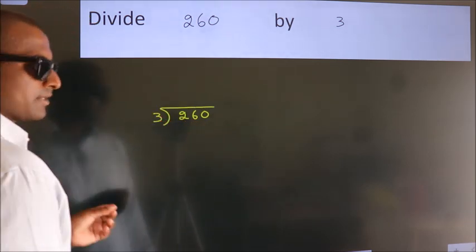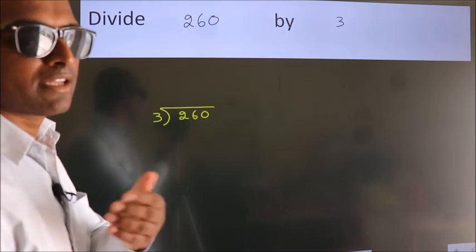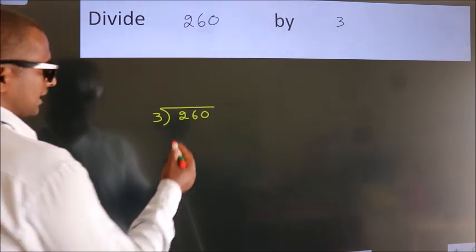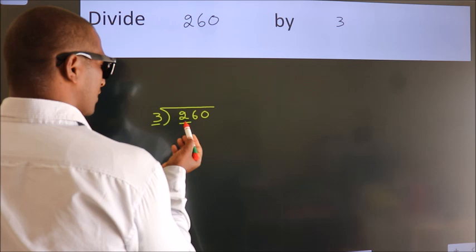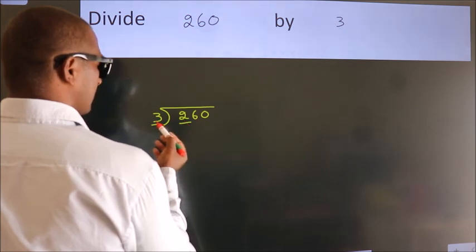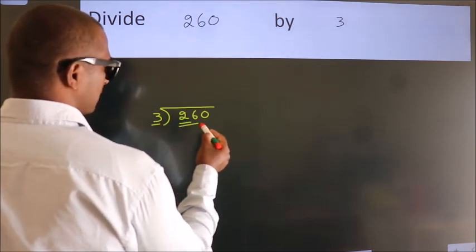This is your step 1. Next, here we have 2, here 3. 2 is smaller than 3, so we should take 2 numbers: 26.